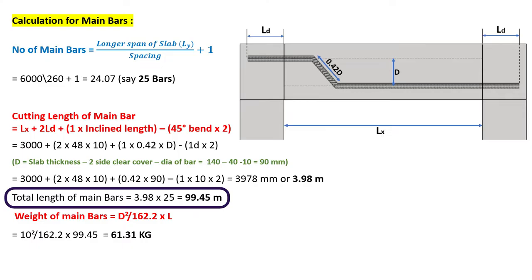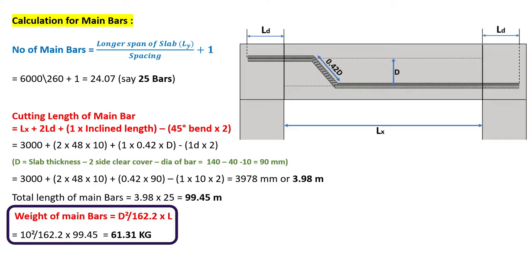The total length of main bars equals cutting length multiplied by number of main bars: 3.98 × 25 = 99.45 meters. The weight of main bars is calculated using the formula D² / 162.2 × L, where D is 10 mm and L is 99.45 meters. The total weight of main bars is 61.31 kg.